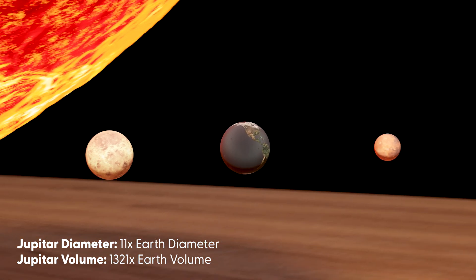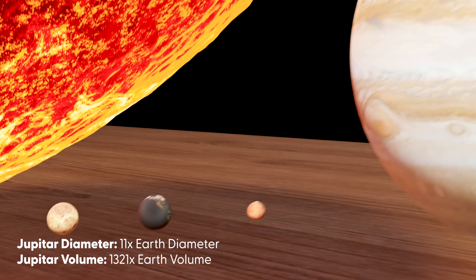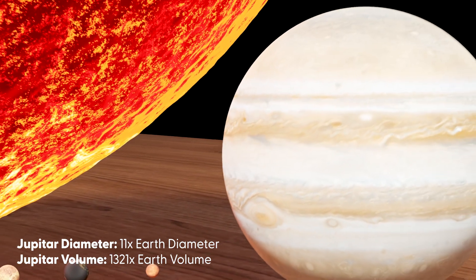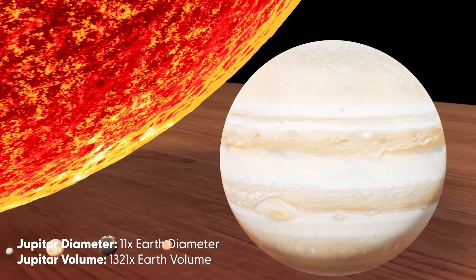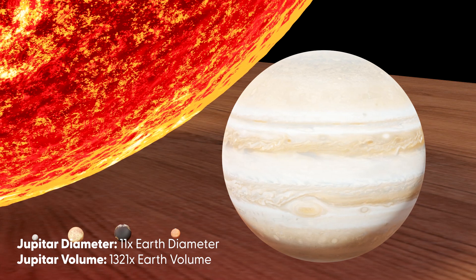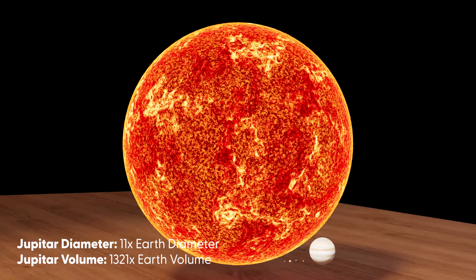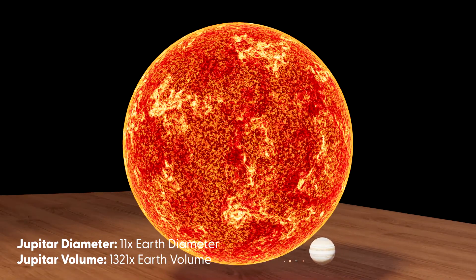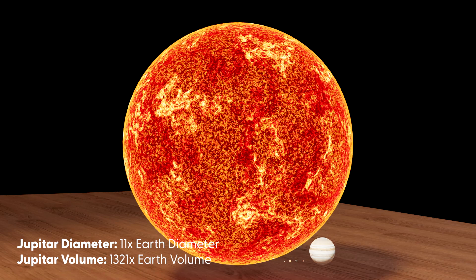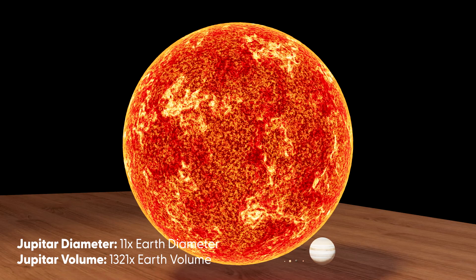Jupiter, often shown slightly larger than Earth, is actually 1,321 times larger than Earth, but still relatively small compared to the sun. It has a diameter of 11 times Earth's and a volume of 1,321 times Earth.